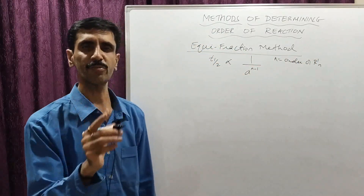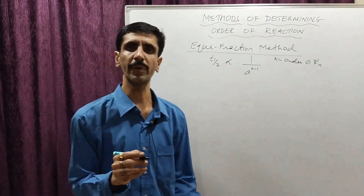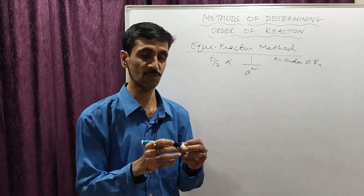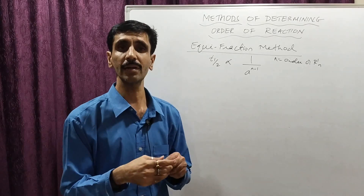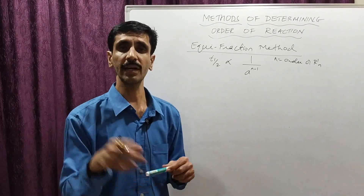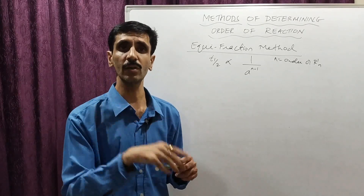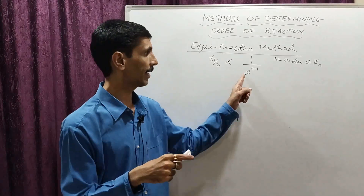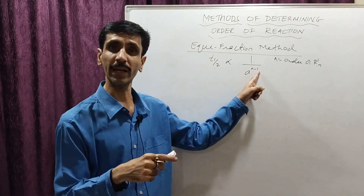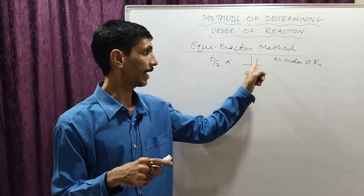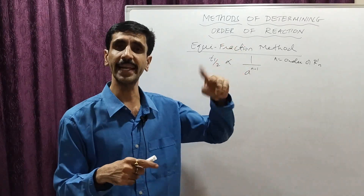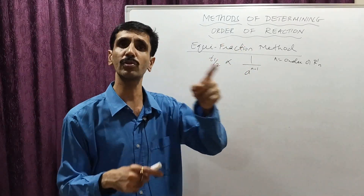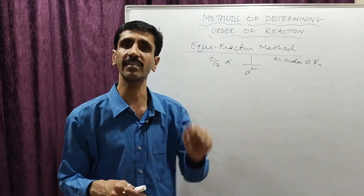The general formula is: T half is proportional to 1 upon a raised to n minus 1. If n value is 0, then we get a raised to minus 1, meaning T half is directly proportional to the initial concentration.